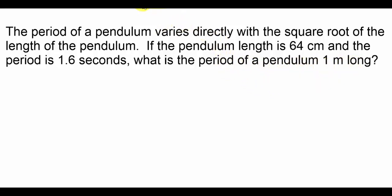In setting this up, we say the period P varies directly, so that's K, with the square root of the length. This is what I call our first case, so I'll notate that with subscripts 1. Then we also have a second case with a different period and a different length, so I'll notate that with subscripts 2. Notice I can solve both of these such that they both equal K, and if they both equal that constant, then I can set those two equal to each other.